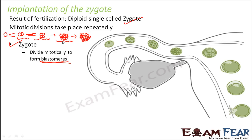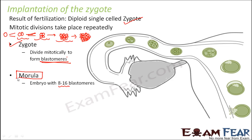Later, blastomeres with eight to sixteen cells are called morula. Morula is the name given to an embryo with eight to sixteen blastomeres. The structures present inside the morula are all blastomeres — aggregates of cells. Then from the morula, the blastocyst is formed.